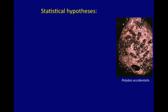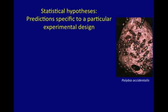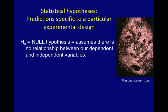It's important when talking about statistics and hypothesis testing in biology that we define some things. One thing that is very often confusing for students is statistical hypotheses, because we talk about biological hypotheses and then statistical hypotheses, and they're a little bit different. Statistical hypotheses are predictions that are very specific — specific to a particular experimental design — whereas a general biological hypothesis is much broader. One statistical hypothesis is referred to as a null hypothesis, and the null hypothesis always assumes that there's no relationship between our dependent and independent variables. Whatever pattern we may observe is just due to chance.